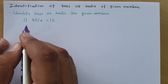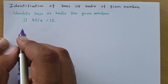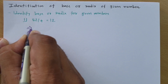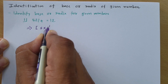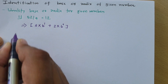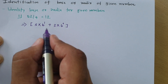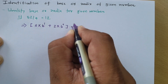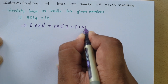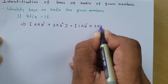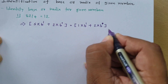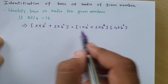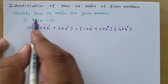I'll explain the basic process and solve 3–4 questions so you understand the approach. If we say the base is B, then 52 can be represented as 5×B¹ + 2×B⁰. Dividing by 4, the right-hand side 12 can be written as 1×B¹ + 2×B⁰, multiplied by 4, giving 4×B⁰ on the right. We solve this equation to find base B.